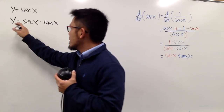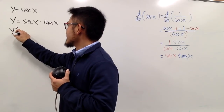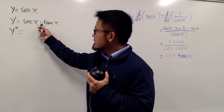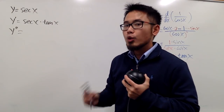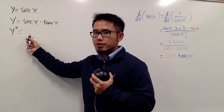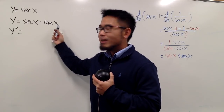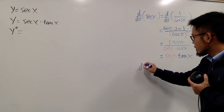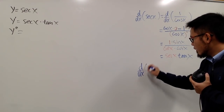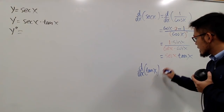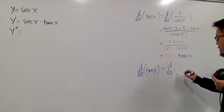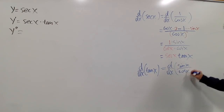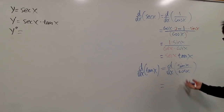To differentiate this again and get y″, notice that this is the product of two functions, so we have to use the product rule: keep the first function and multiply by the derivative of the second. But I haven't shown you the derivative of tangent yet, so let me do it right here. Let's go ahead and put down the derivative of tangent x. We know tangent is the same as sine x over cosine x, so this is the same as differentiating sine x over cosine x — and this is another quotient rule question.